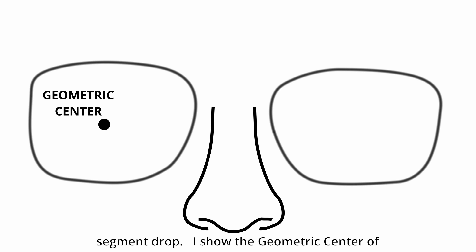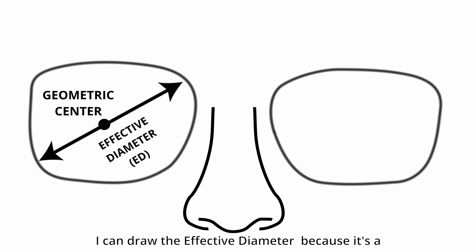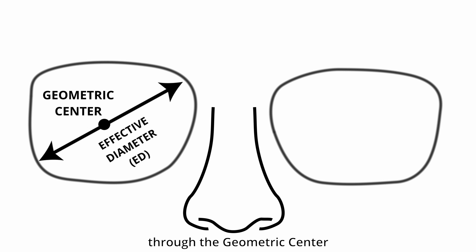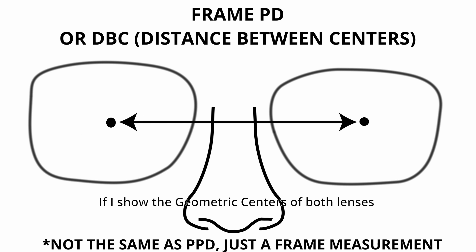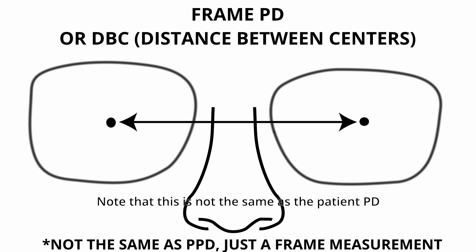I show the geometric center of the right lens — the left one would be the same. I can draw the effective diameter because it's a measurement of the longest line that can be drawn through the geometric center. If I show the geometric centers of both lenses, I can see the frame PD. Note that this is not the same as the patient PD.